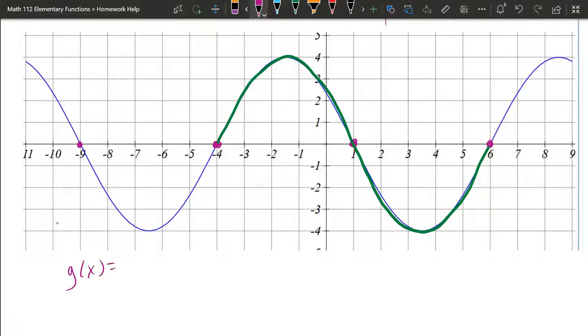So our function will be A sine, we'll go with little a x minus h plus k. Alright so first of all let's do all the vertical and then we'll do the horizontal. You can do either order.